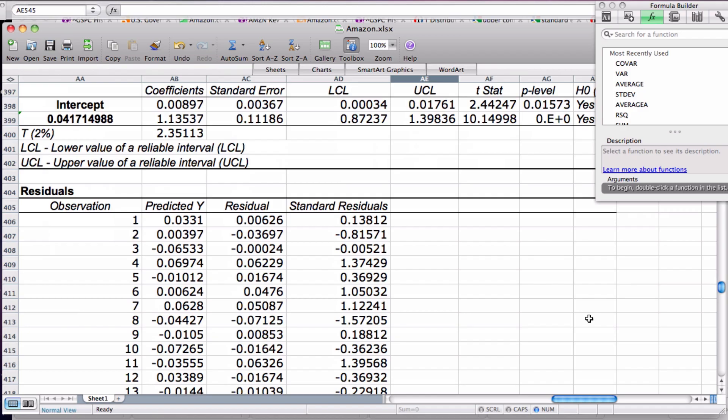Here we have the residuals, which are the actual difference between the predicted y-values and the real y-values. The standard residuals are the number of standard deviations that the actual y differs from the predicted y.